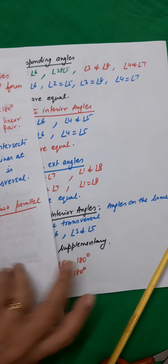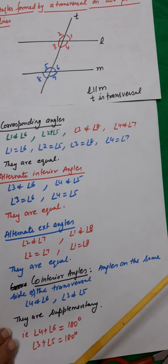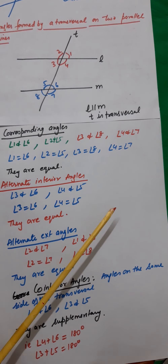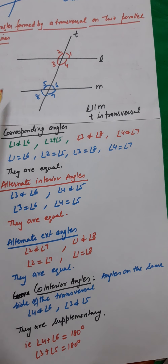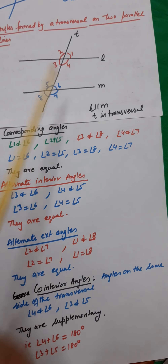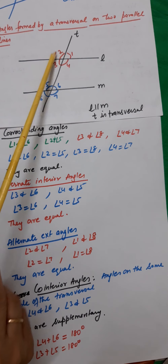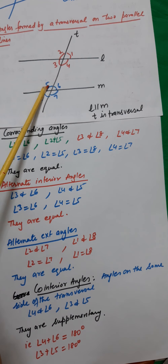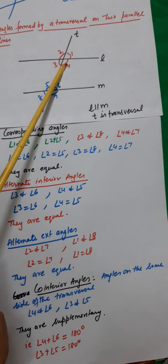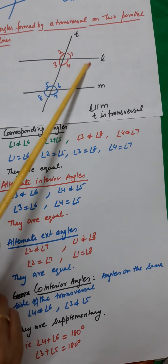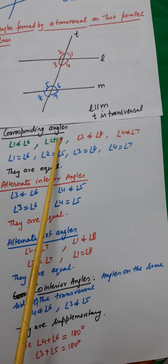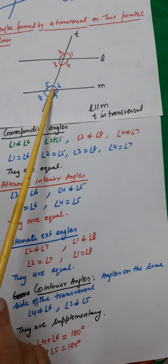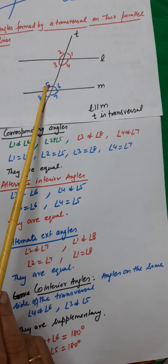Let us discuss corresponding angles. Angle 1 and angle 6 are called corresponding angles. Similarly, 2 and 5 are also in similar positioning. So we have many pairs of corresponding angles: angle 2 and angle 5, angle 3 and angle 8, angle 4 and angle 7. The property of corresponding angles is that they are all equal. That is, angle 1 equals angle 6, angle 2 equals angle 5 — so if this angle is 105 degrees, angle 5 will also be 105 degrees.